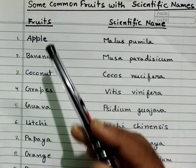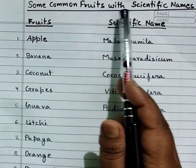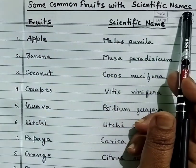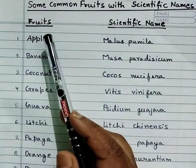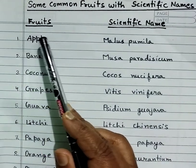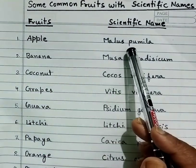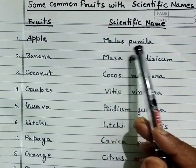Some common fruits with their scientific names. First is apple, scientific name Malus domestica.